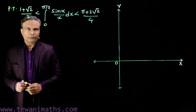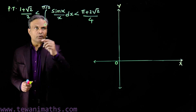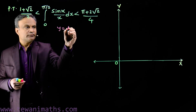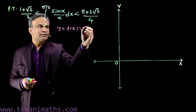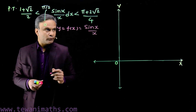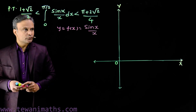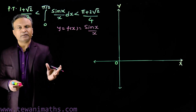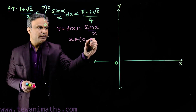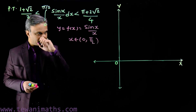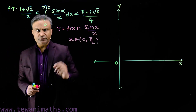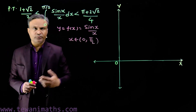To begin, we draw the graph of the integrand function. The integrand function is y = f(x) = sin(x)/x, with x belonging to the interval 0 to π/2. So we will draw the graph in the interval 0 to π/2. To draw the graph of this function, we first check the nature of the function.